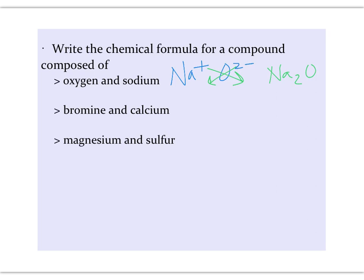In bromine and calcium, my calcium goes first, metal first, cation first, and then my bromine goes second, anion second, or non-metal second. If I criss-cross my charges, CaBr2.